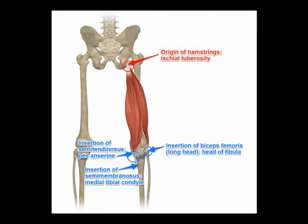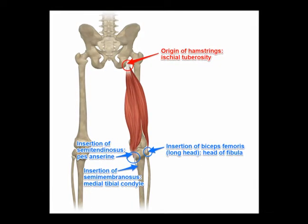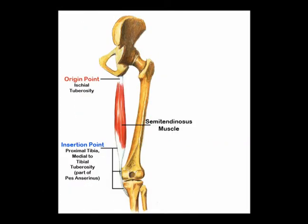The semitendinosus muscle is part of the hamstrings muscle group. It crosses two joints: the hip joint and the knee joint.